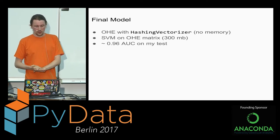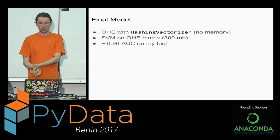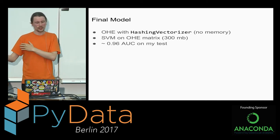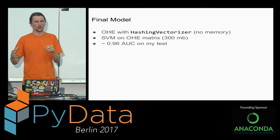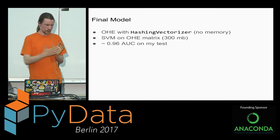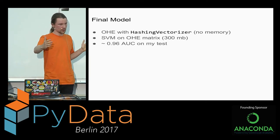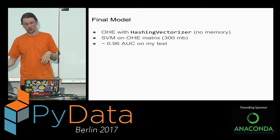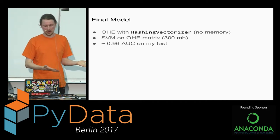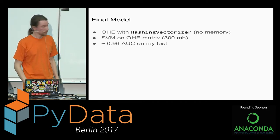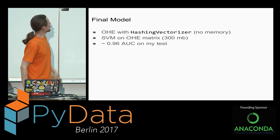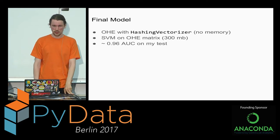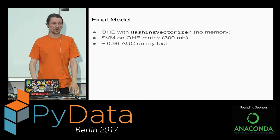This was my final model: one-hot encoding with HashingVectorizer that occupies no memory. The model weights were larger because of the higher dimensionality, but 300 megabytes is much less than 2 gigabytes. With that model, I was able to achieve 96% AUC, and I decided to use it as my final model.